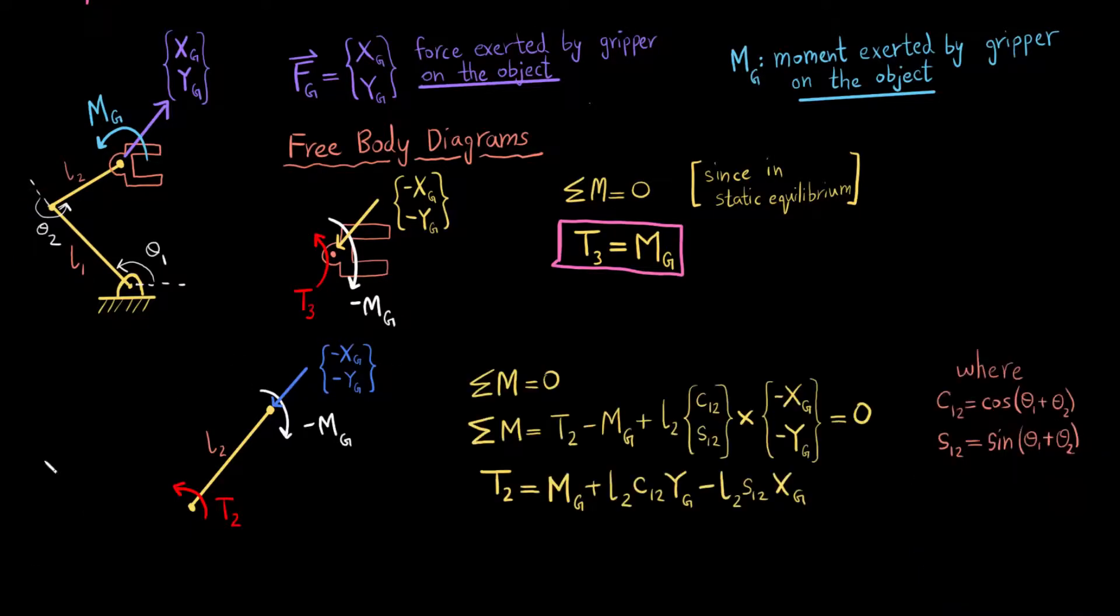So now I again do the same thing. I do the summation of moments equal to zero. And so this is my T2, which is the moment exerted by the motor. This is my Mg, which is moment exerted on the second link. And this part right here is the moment which is exerted as a result of the forces acting on the link. So this is just my force vector. And this is the distance. So what I have done is I have used the formula R cross F in order to find the moment.